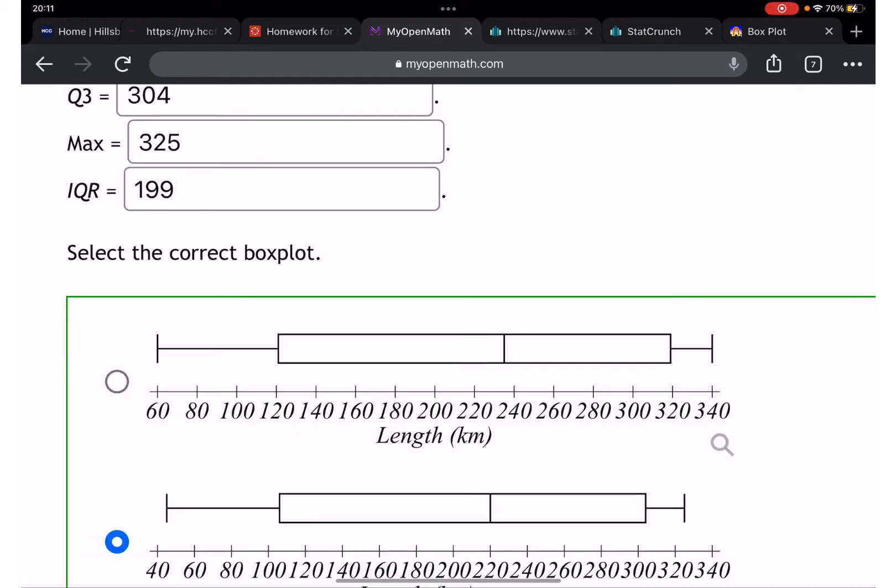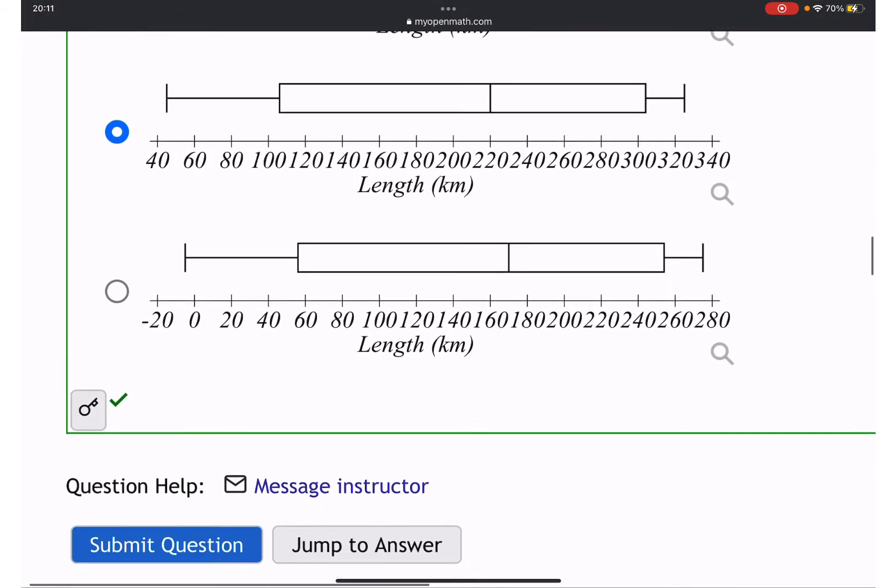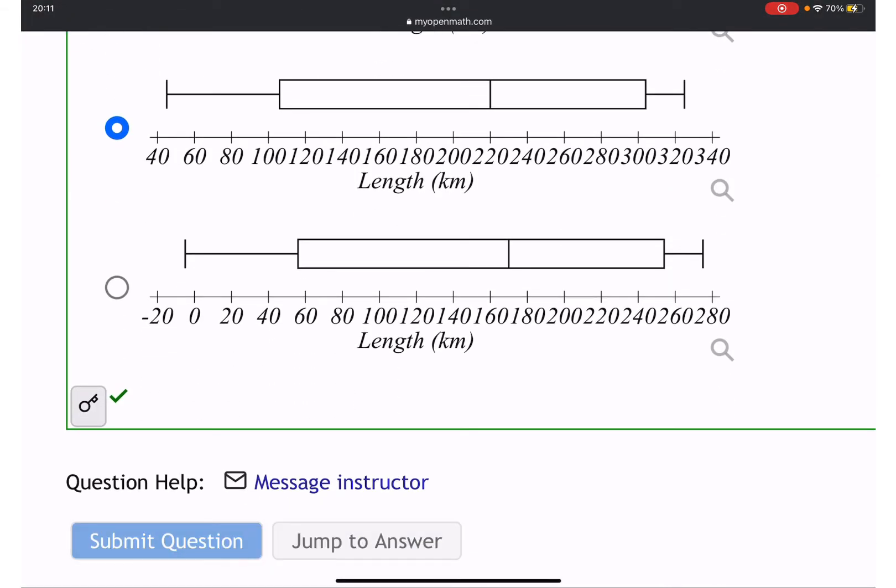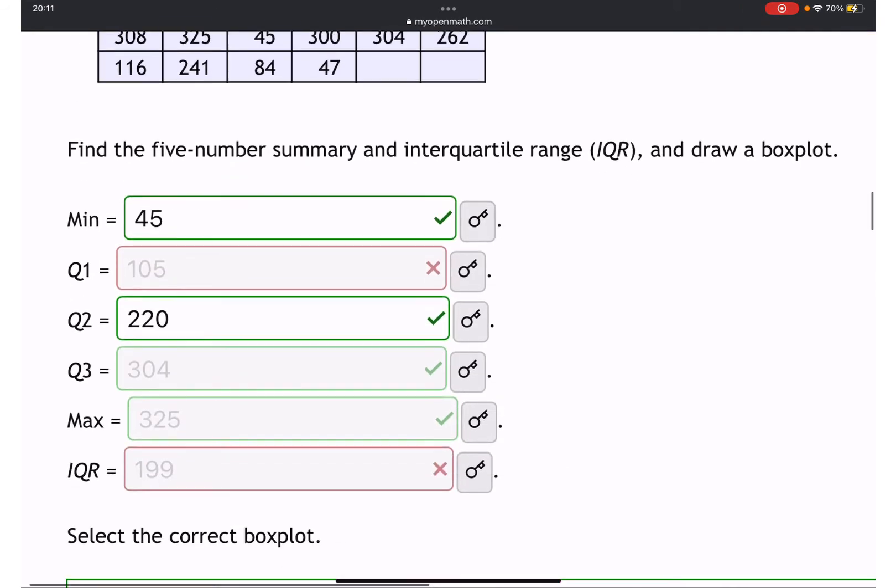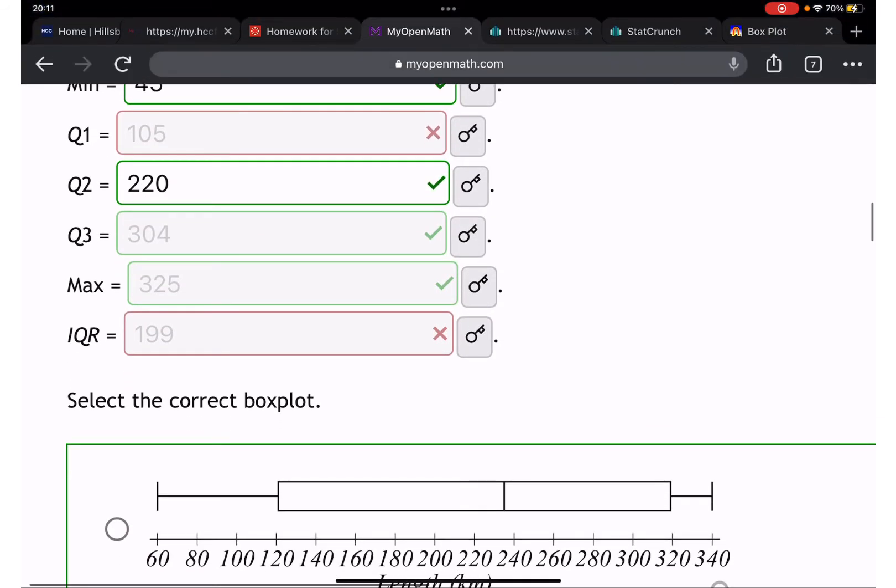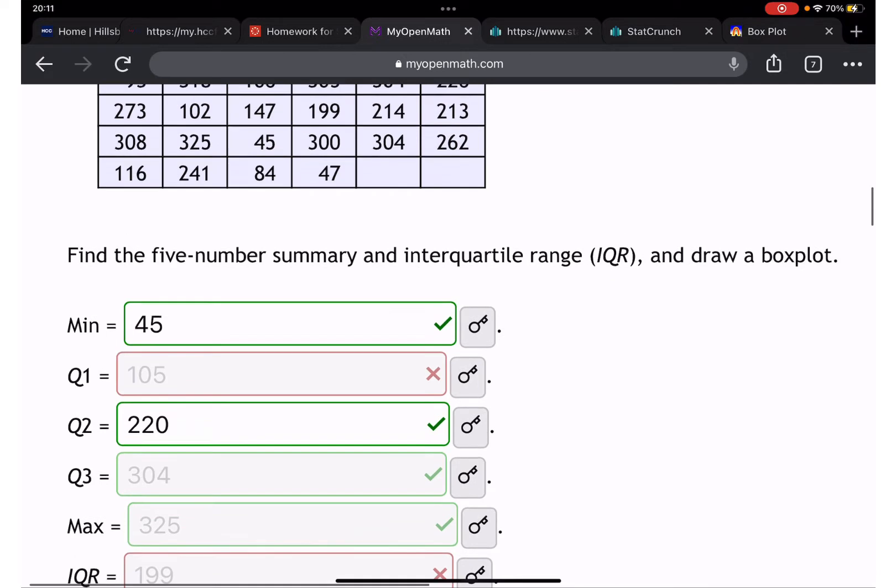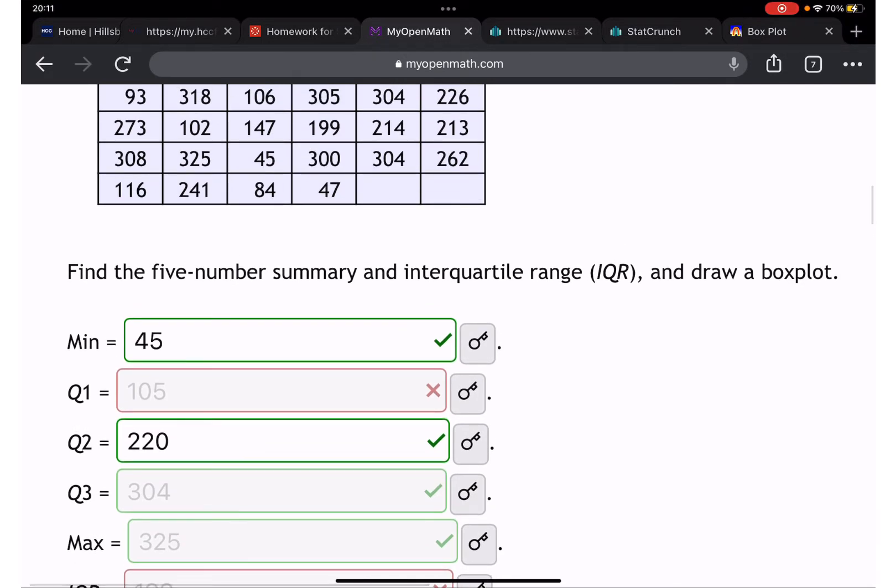And interquartile - 199, I think I had 199 for first attempt or second attempt. Okay, now we have it. Let's submit.